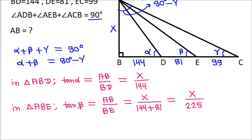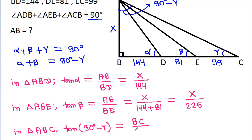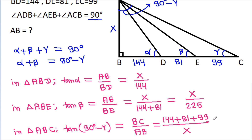In triangle ABC, tan(90 degrees minus gamma) equals BC by AB. And BC is 144 plus 81 plus 99, by AB which is X. That gives us 324 by X.